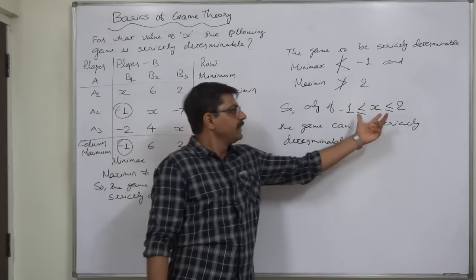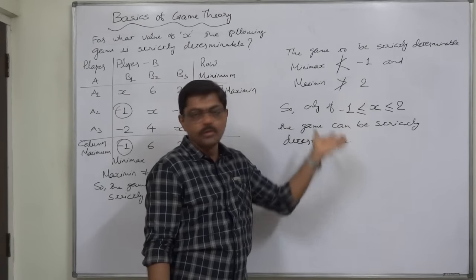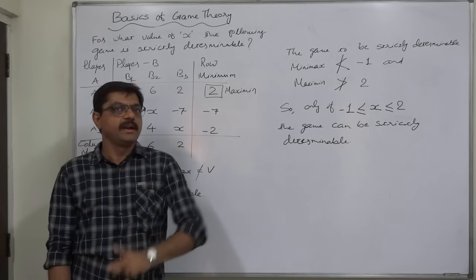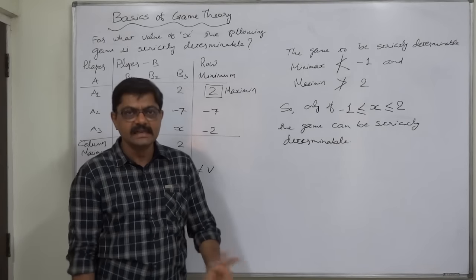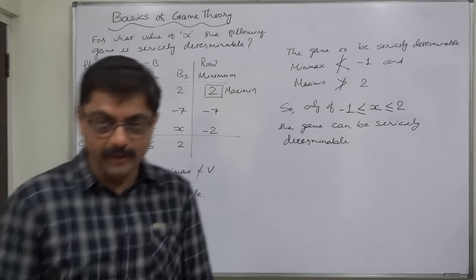And one value between these two. You can take, say 0, 1 or exactly 2 or exactly minus 1, any. But don't forget to make all these three trials and observe the conclusion. That will be the same. Thank you very much.